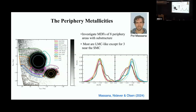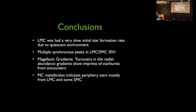In conclusion: the LMC had a very slow initial star formation rate due to its quiescent environment. Star formation histories show multiple synchronous peaks likely due to Cloud-Cloud interactions causing starbursts, seen in abundance gradient turnovers in the radial abundance gradients. Looking at the MC periphery using Gaia XP metallicities, most material appears to come from the LMC stripped off the disc, while some right around the SMC comes from the SMC.